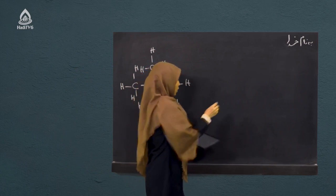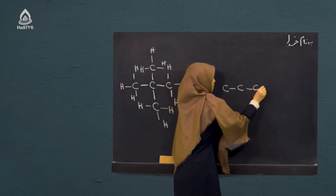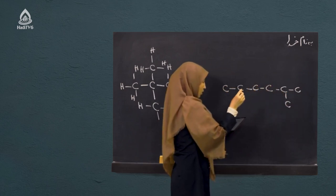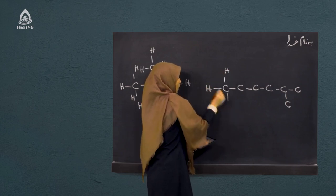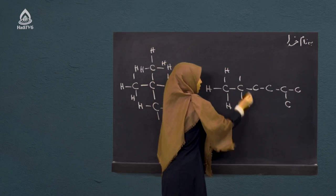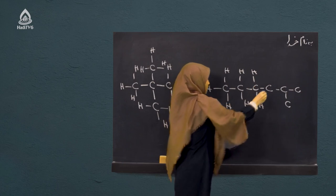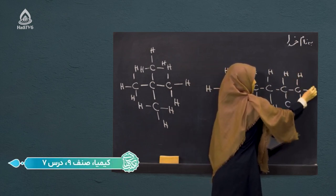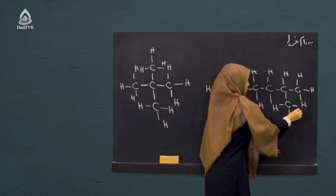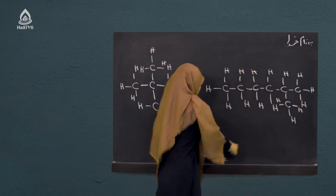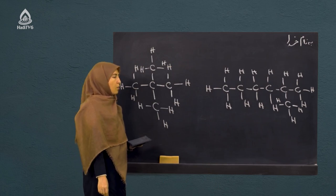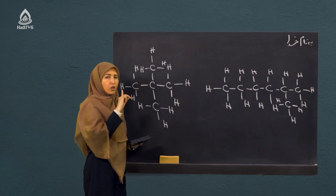یک ساختار دیگر هم داده شده که در این قسمت می‌نویسیم. یک، دو، سه، چهار، پنج، شش اتم کاربون داریم. و بر روی کاربون دوم یک اتم کاربون دیگر قرار گرفته. اتم‌های هایدروجن در قسمت‌های مختلف قرار می‌دهیم. هر اتم کاربون چهار رابطه را تشکیل داده می‌تواند. فرمول مالیکولی یکسان اما فرمول ساختمانی متفاوت.